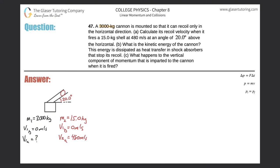Number 47. A 3,000 kilogram cannon is mounted so that it can recoil only in the horizontal direction. Letter A. Calculate its recoil velocity when it fires a 15 kilogram shell at 480 meters per second at an angle of 20 degrees above the horizontal.